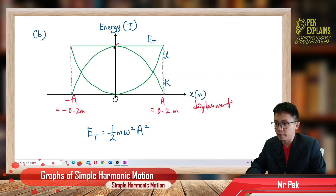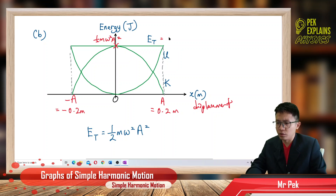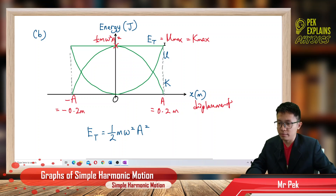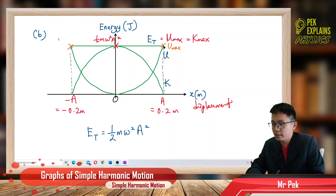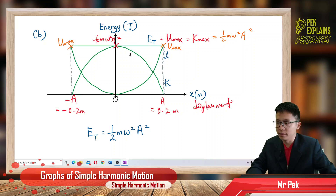The maximum value on the energy axis is ½mω²A². This is the value of the total energy, which is always constant. The total energy equals the maximum potential energy U_max and also equals the maximum kinetic energy K_max. When U is maximum at the amplitude, it equals ½mω²A². When K is maximum at equilibrium, it also equals ½mω²A².